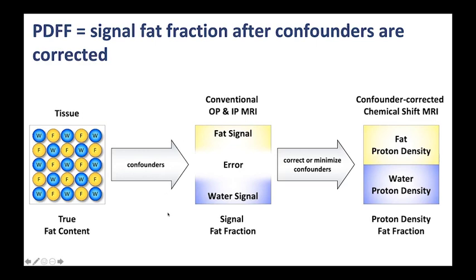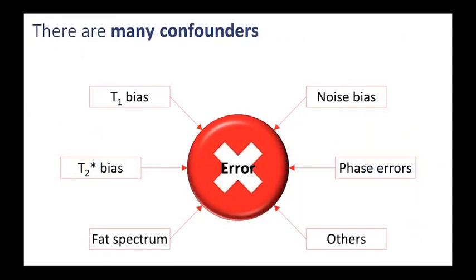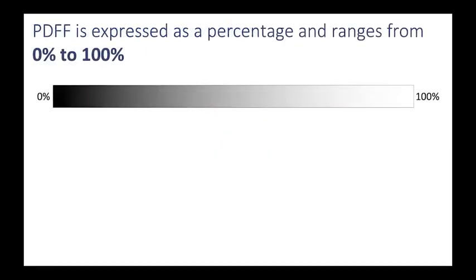These confounders are very important because those are the things that we need to minimize or correct, and there are many different confounders as illustrated in this slide. Time does not permit me to go through all of them, but I will point out that there are many confounders that contaminate the signal fat fraction, and if each of these confounders is either minimized or corrected using an appropriate technique and/or modeling, then the signal fat fraction can be converted into a proton density fat fraction.